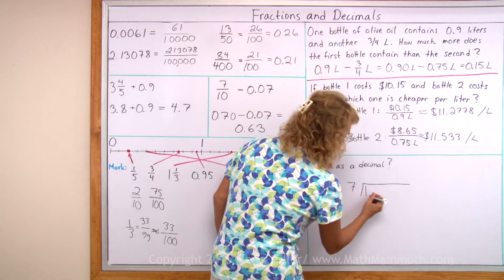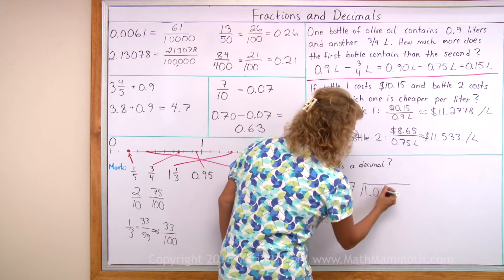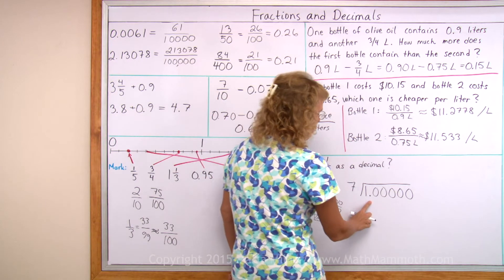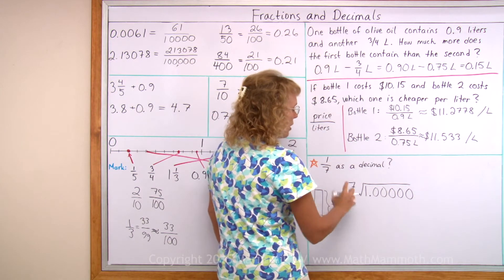And then over here, instead of writing one, I write one point zero zero zero zero. So I can do my division here with the decimal number. And then I divide normally.